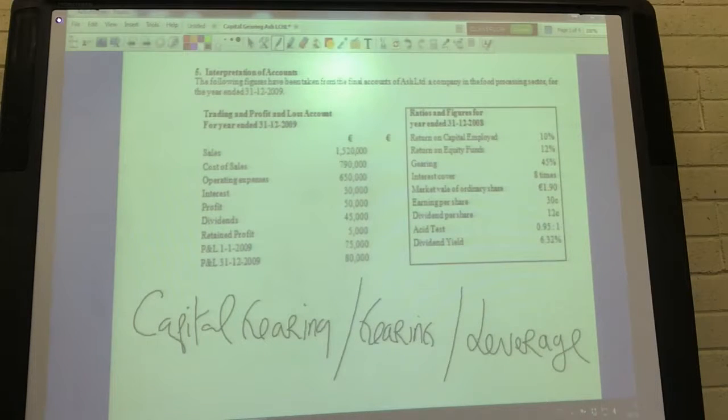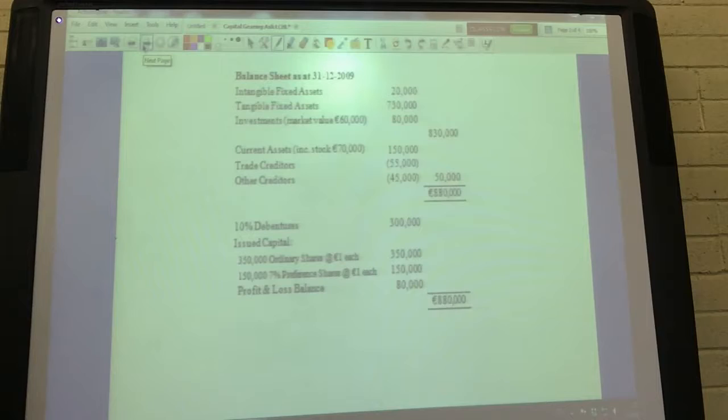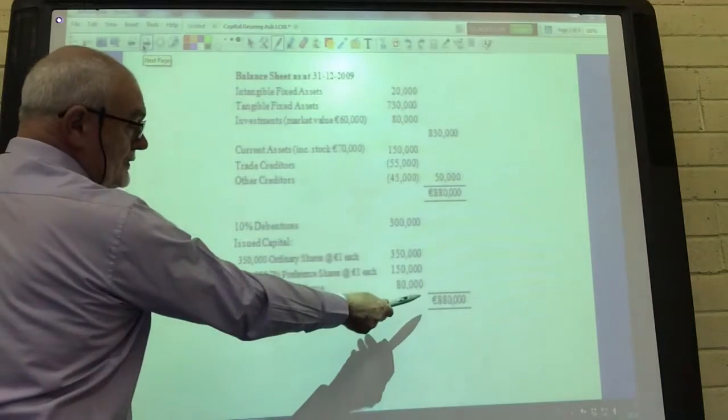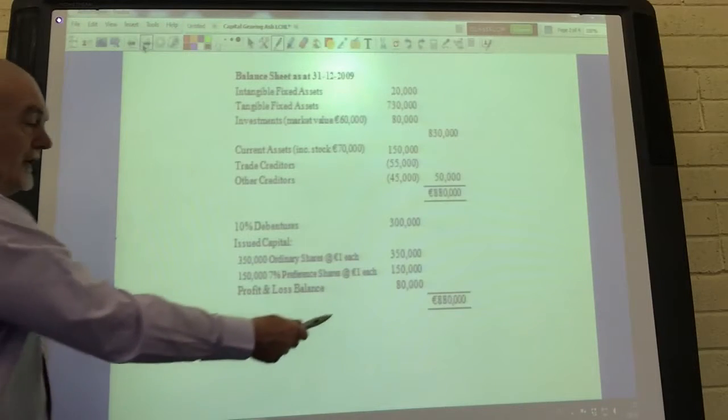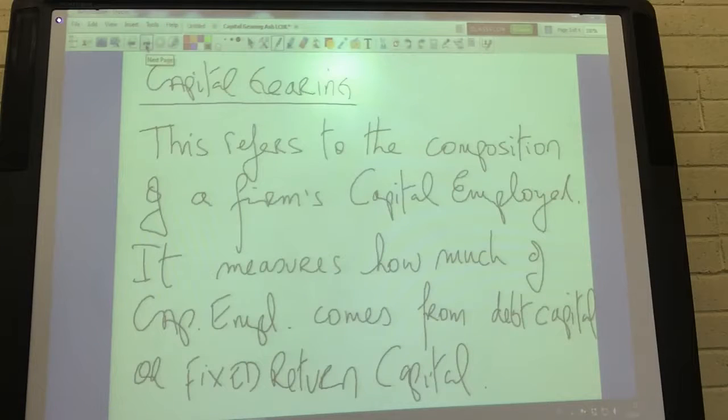We're back with Ash Limited and now we're going to talk about capital gearing or leverage. Capital gearing refers to the structure of the company's capital employed. It refers to the composition of the company's medium and long-term finance. We can see that Ash Limited capital employed is 880,000 euro.